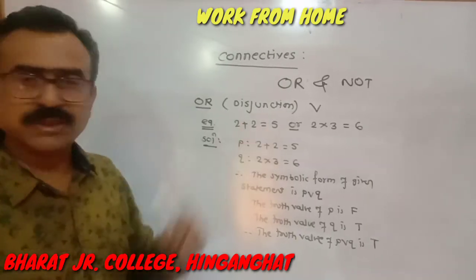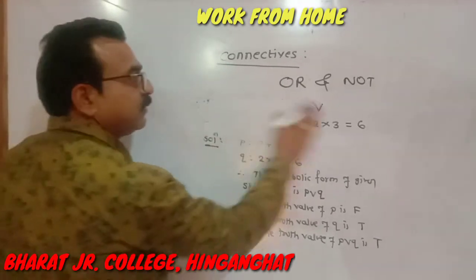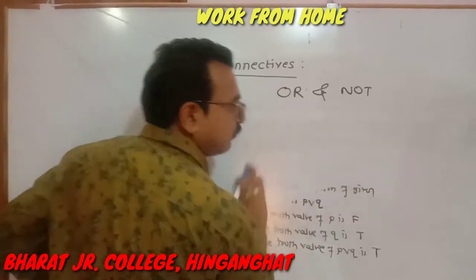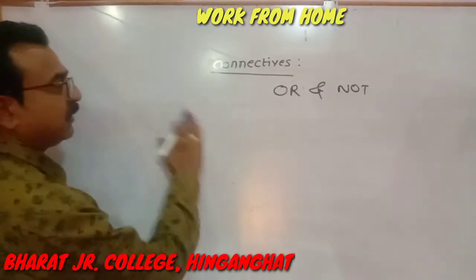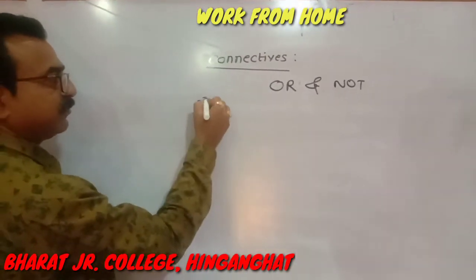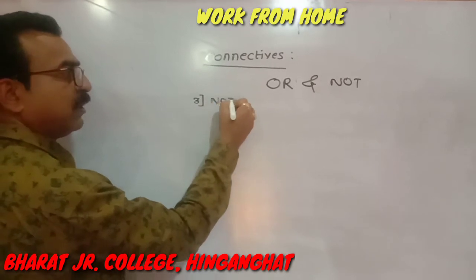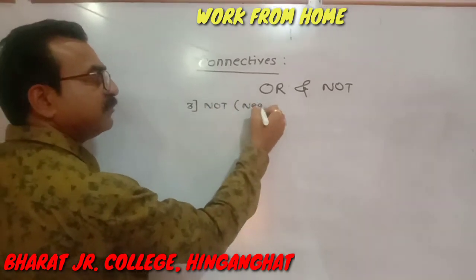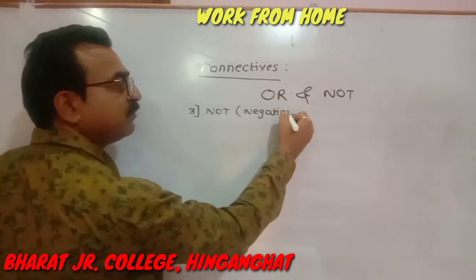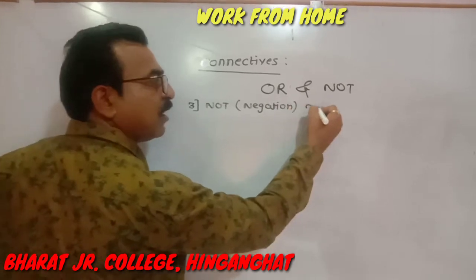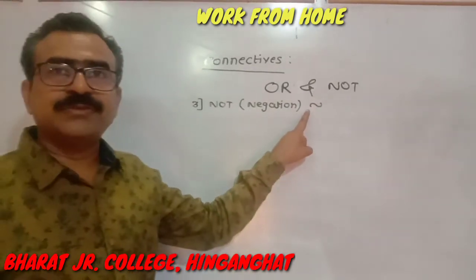We have completed our second connective, OR or disjunction. Now let us learn another connective, and that is NOT. Its mathematical name is negation and its symbol is ¬.